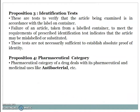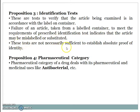Proposition 3 — Identification Test: these are tests to verify that the article being examined is in accordance with the label on the container. Failure of an article to meet the prescribed identification test indicates that the article may be misidentified or substituted. These tests are not necessarily sufficient to establish absolute proof of identity.